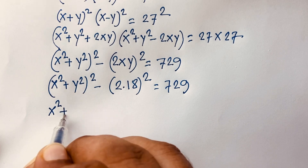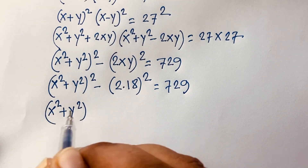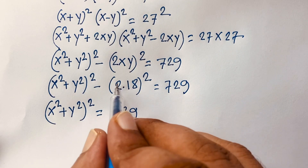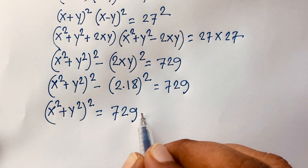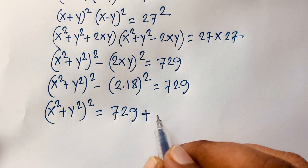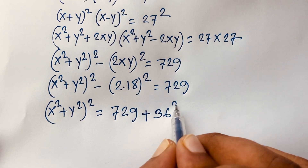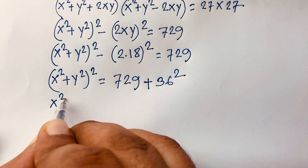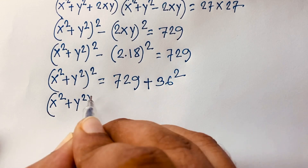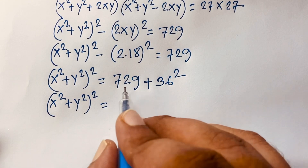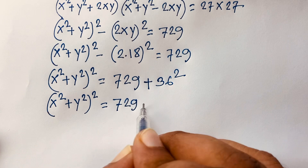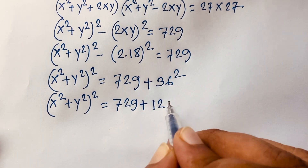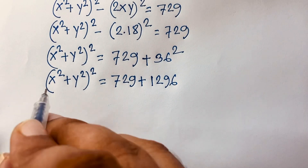I can say here is x squared plus y squared whole square is equal to 729, and I move this term to this side, so it will be plus 2 times 18, which is 36, squared. Then this equation becomes: x squared plus y squared whole square equals 729 plus 36 squared, which is 1296.